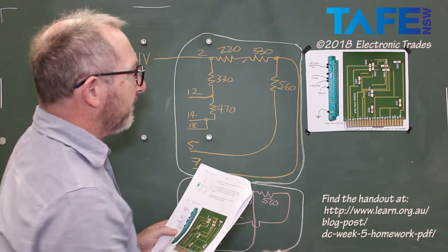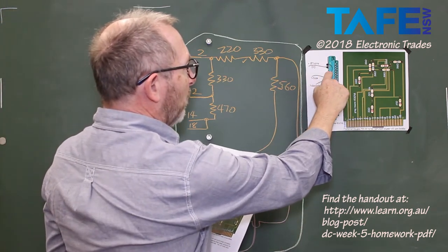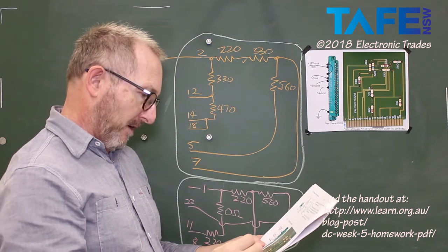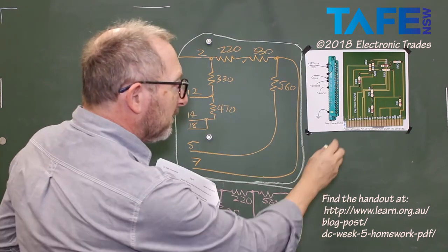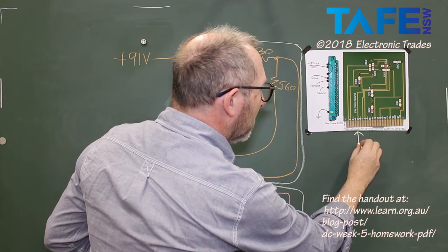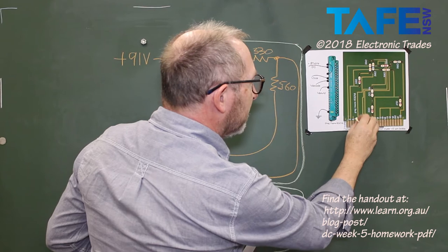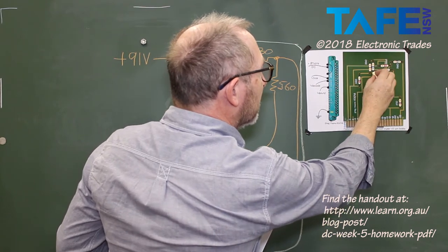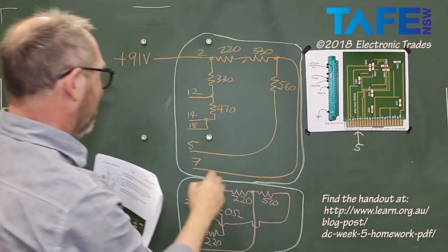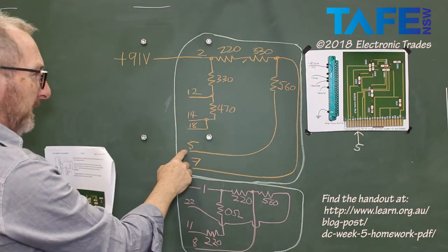Pin number 5. This is interesting. Pin number 1 is connected to pin number 5. So where does this pin number 5 go to? Pin number 5 on the board is here. Pin number 5 comes up and goes into a 560. Oh, we already had that. There it is there, isn't it? Pin number 5.